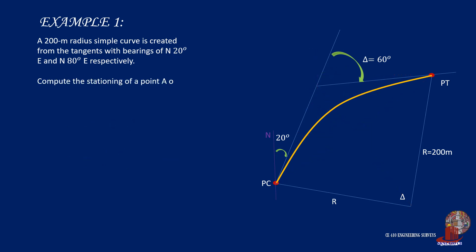A follow-up requirement for the problem states: compute the stationing of a point A on the curve having a deflection of 6 degrees from the PC, which is at station 10 plus 560. By stationing, it only means the location of point A.